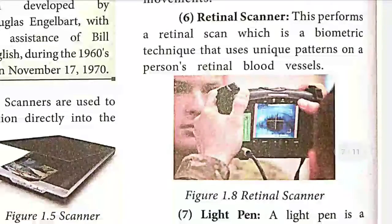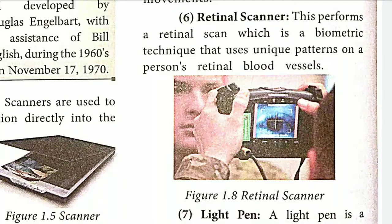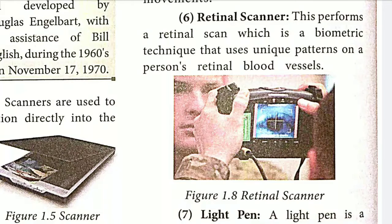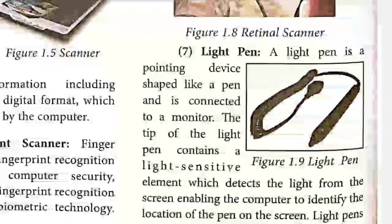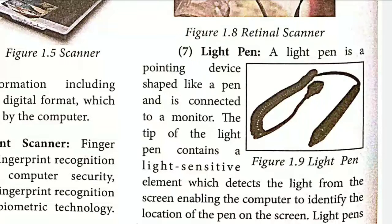Next is the retinal scanner. This scanner scans the retina of your eyes. Your retina is unique — nobody in the world has the same retina pattern. It captures the retina pattern and stores it in memory, so the next time you scan, it compares your retina with the stored one to identify the user. Next is the light pen, which is used as an input unit — by touching on the screen you can create shortcuts or draw something.